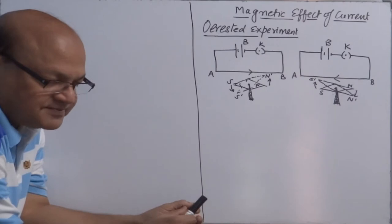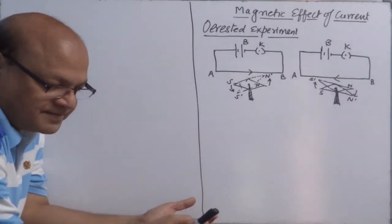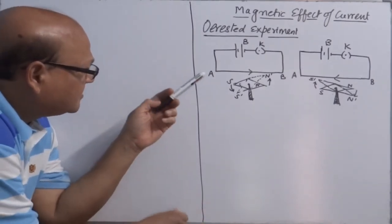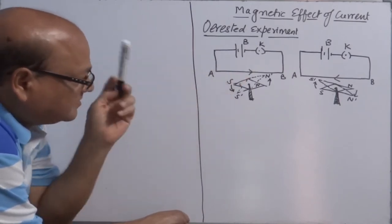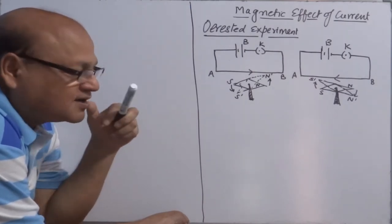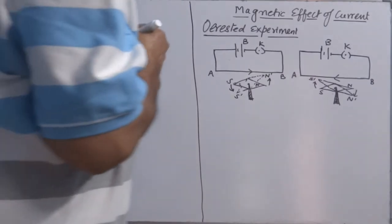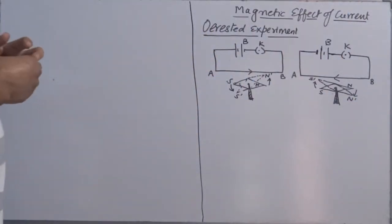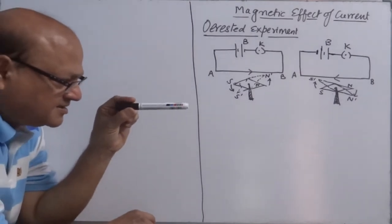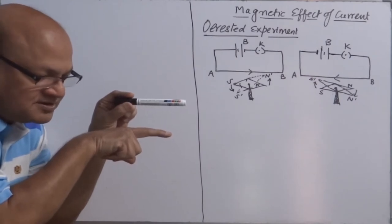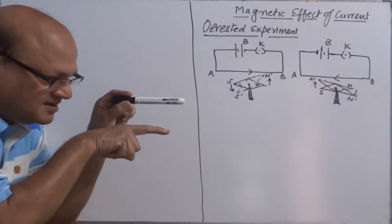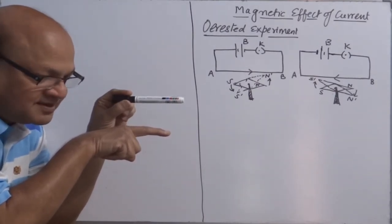It was first observed in Oersted's experiment. It is a simple experiment. In his experimental arrangement, he has a conductor AB connected with a battery and key. When you plug in the key, current begins to flow through the conductor. There is also another circuit in which the polarity of the battery is reversed. The wire AB is arranged vertically, and below it a compass needle is kept, because only a magnetic needle can easily detect the presence of magnetic field in any region.